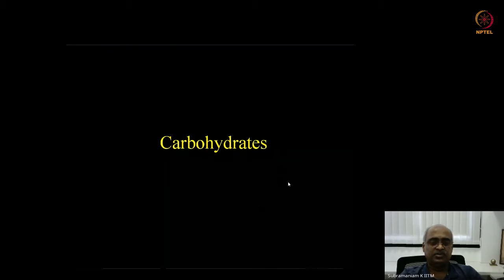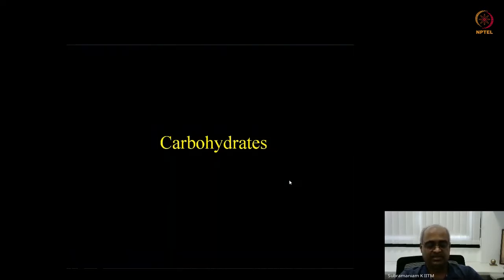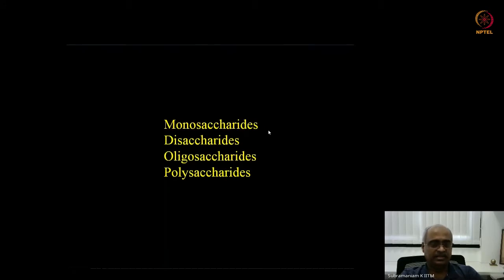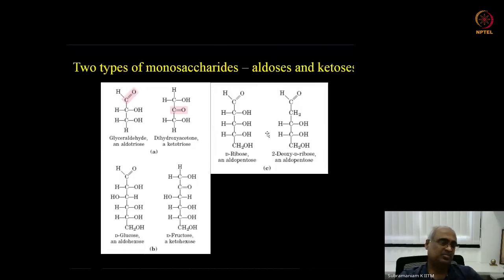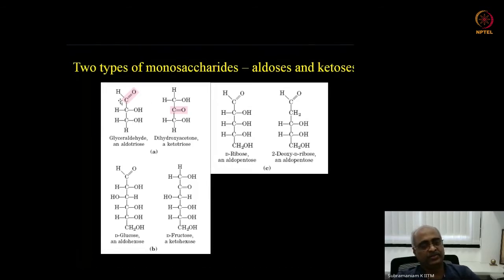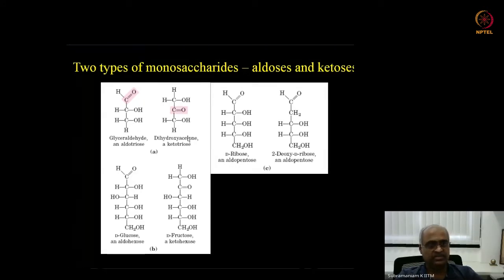We'll refresh our knowledge of basic carbohydrate terminology. Monosaccharides are the smallest units, linked through glycosidic bonds to form disaccharides, oligosaccharides, and polysaccharides. The smallest monosaccharide is glyceraldehyde, which has an aldehyde group — making it an aldose — and three carbons, so it is an aldotriose.